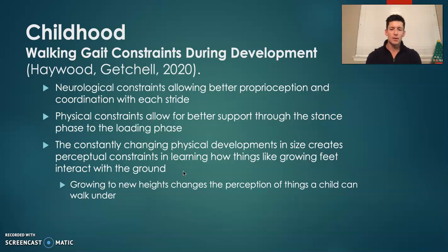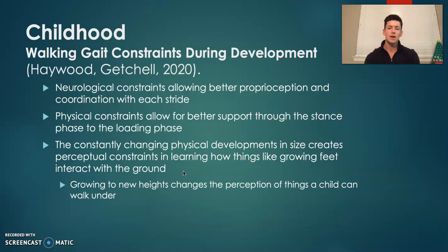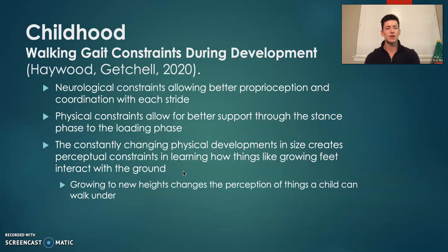Typical constraints during this developmental stage. Neurologically, their proprioception and coordination have improved and gotten a lot better, which affords them a better base of support throughout their walking gait and better stability during their stance phase. Physically, they are now much stronger, which permits better balance during their stance phases and better push-off or propulsion from the terminal stance phase. The constantly changing physical developments during this childhood stage, such as growth spurts, can be perceptually constraining as they try to scale their body to the environment around them.